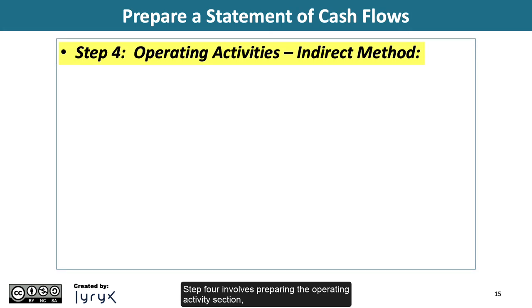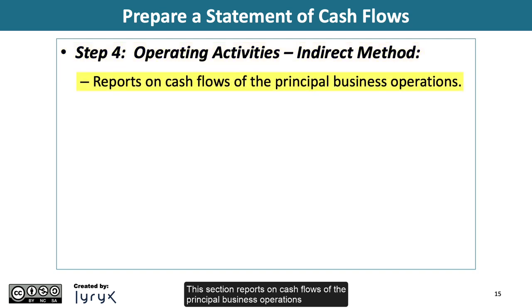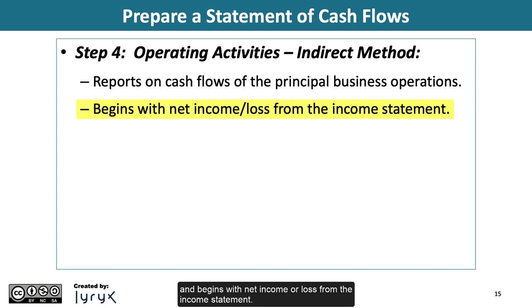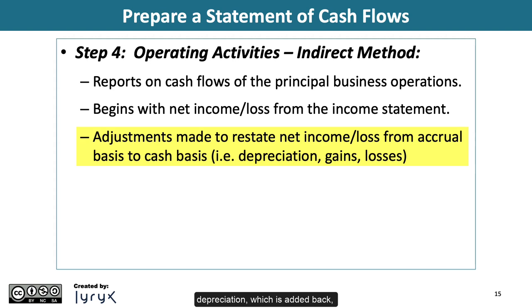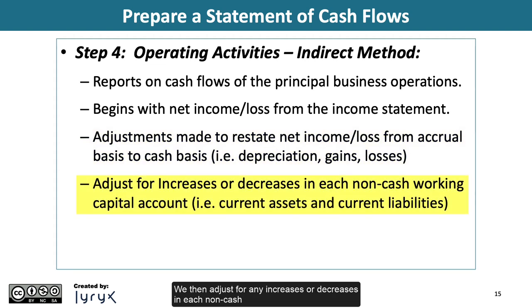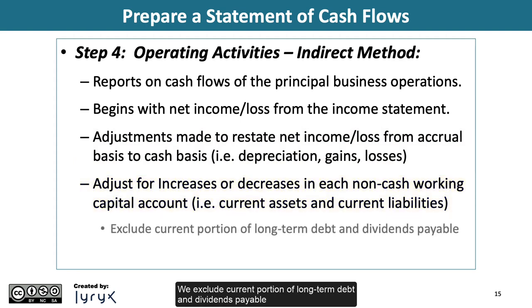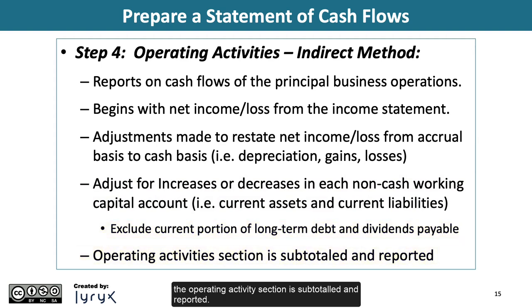Step 4 involves preparing the operating activities section, which for this course will be prepared using the indirect method. This section reports on cash flows of the principal business operations and begins with net income or loss from the income statement. Adjustments are made to restate net income from an accrual basis to a cash basis by adding or subtracting non-cash items — such as depreciation (added back), gains (deducted), and losses (added back). We then adjust for increases or decreases in each non-cash working capital account, i.e., current assets and current liabilities, excluding current portion of long-term debt and dividends payable, which are incorporated into the financing activities section.